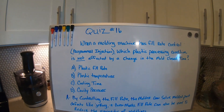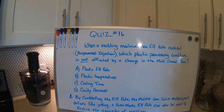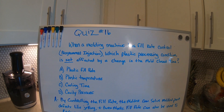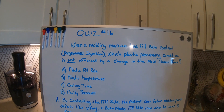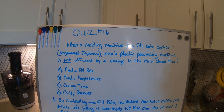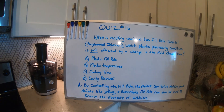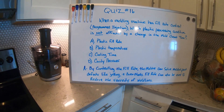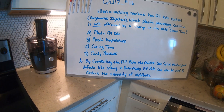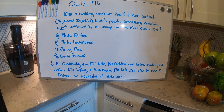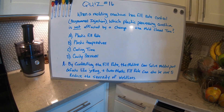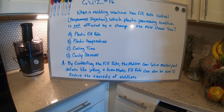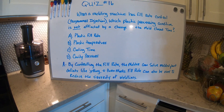The question was: when a molding machine has fill rate control — which is programmed injection — which plastic processing condition is not affected by a change in the mold close time? The right answer is plastic fill rate. By controlling the fill rate, the molder can solve molded part defects like jetting and burn marks. Fill rate can also be used to reduce the severity of weld lines.